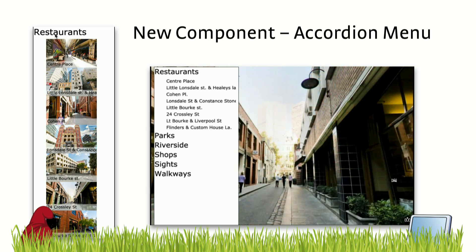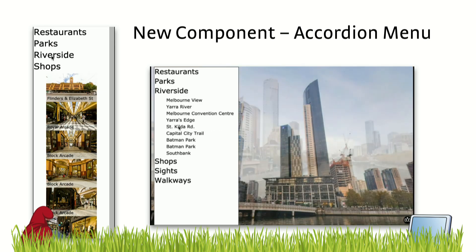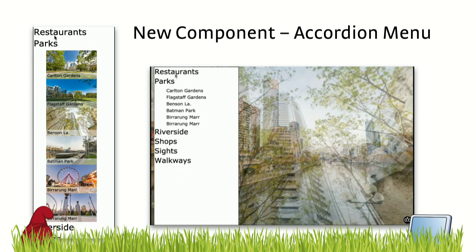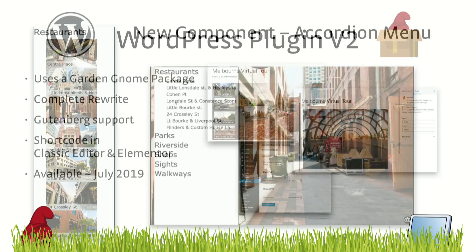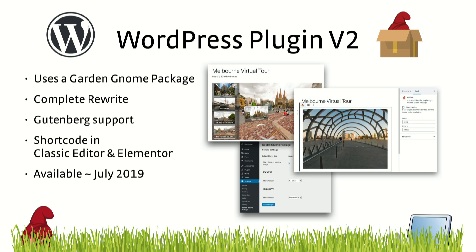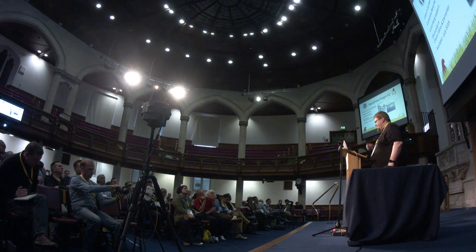Of course, if you have your virtual tour done, what do you want to do with it? We already have WordPress, Drupal, and Joomla plugins, but we also rewrote the WordPress plugin from the ground up to support the Gutenberg editor. You can now just drag and drop a Pano2VR package into WordPress, and it's a normal Gutenberg block that you can design your website around. It still supports the old shortcode for the classic editor and Elementor, and it should be available around July.